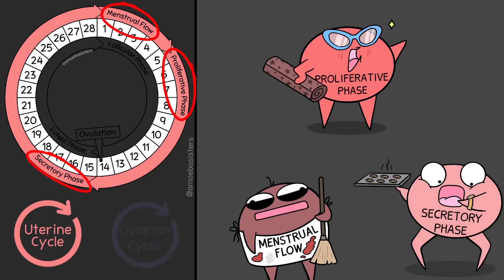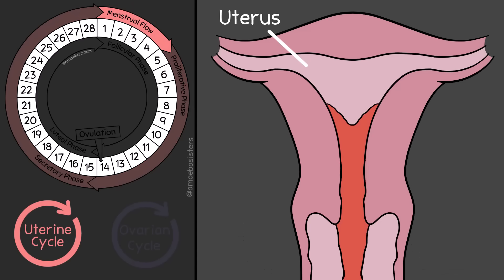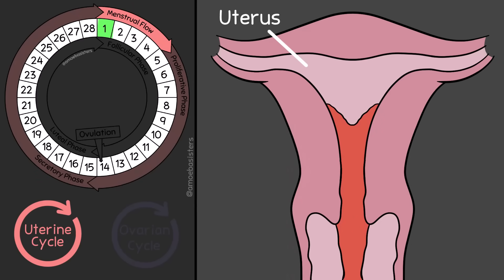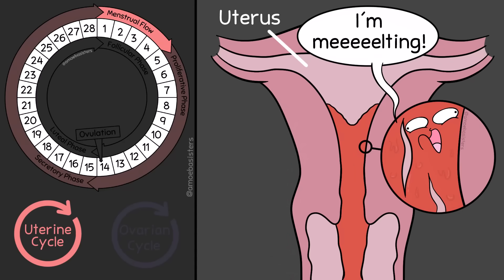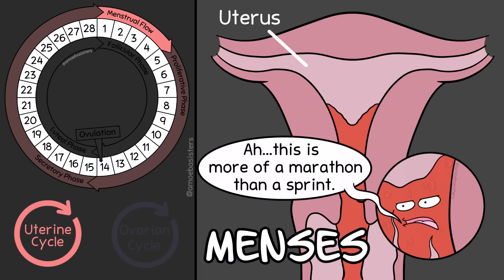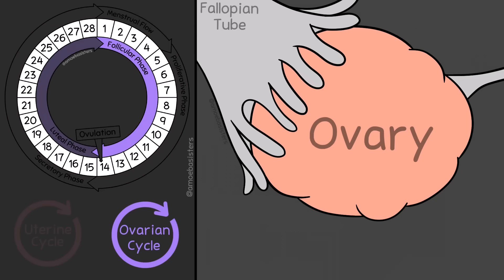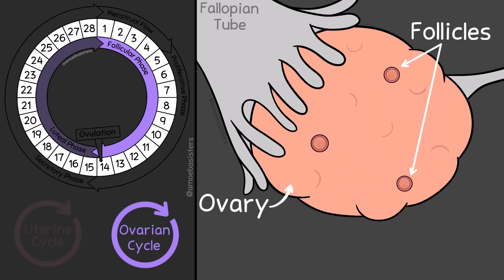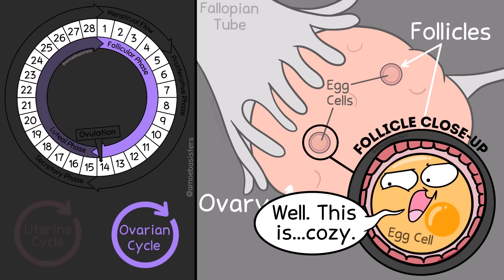Let's start with the first phase of the uterine cycle: the menstrual flow phase. On day one of our circle diagram, the uterine lining is shedding. This uterine lining will shed for a few days — the average is 5 days, but this can vary. This is referred to as menses, or having a period. At the same time, because these cycles happen concurrently, the ovarian cycle is in the first of its two phases, the follicular phase. During this phase, follicles are starting to grow in the ovaries. Each follicle contains an egg cell, so the follicle is like a little egg house that will continue to grow throughout the phase.